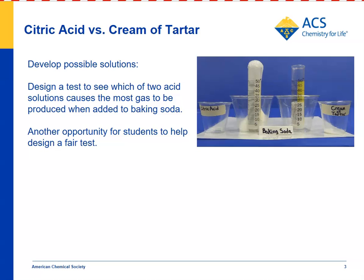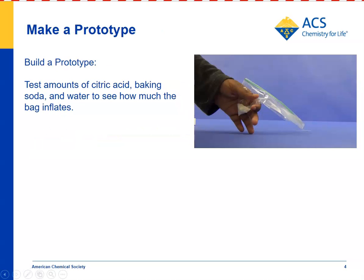So if students want to use a small amount of reactants, they should probably use citric acid as opposed to cream of tartar. Then, since the reaction will have to happen in some kind of a bag, students put baking soda in the corner of a zip-closing plastic bag and then have a partner add citric acid solution.